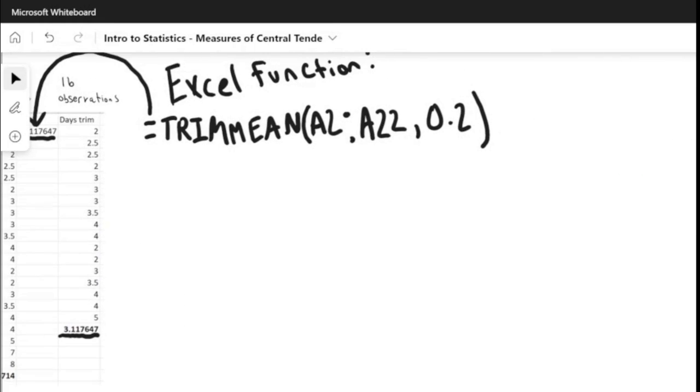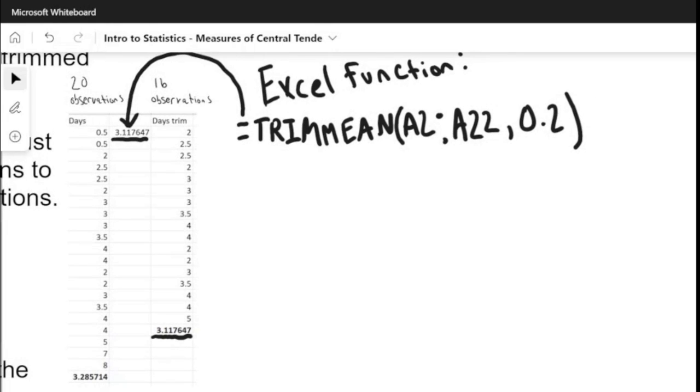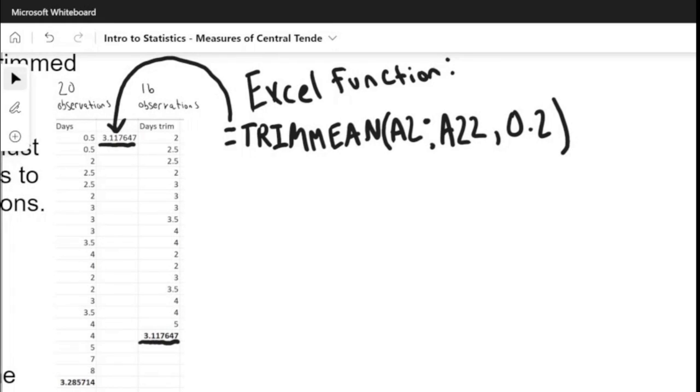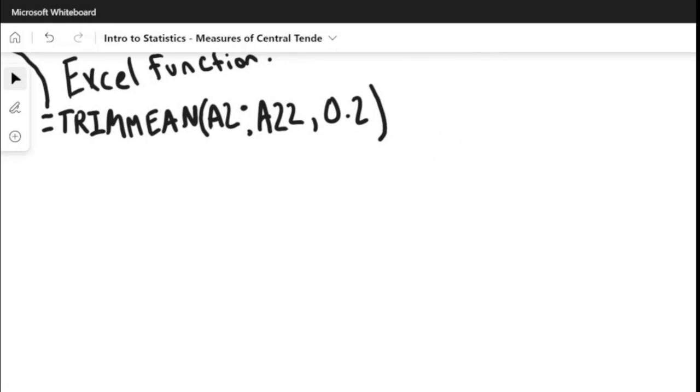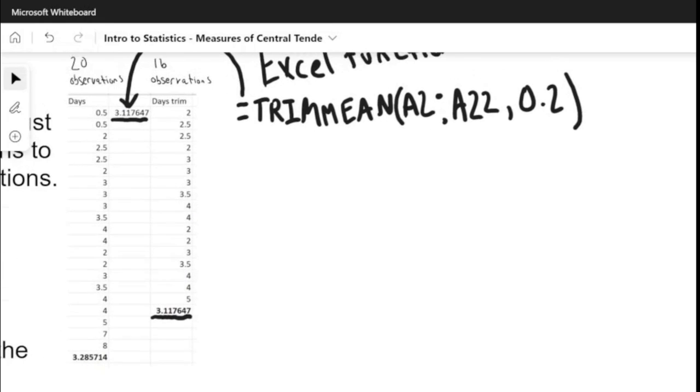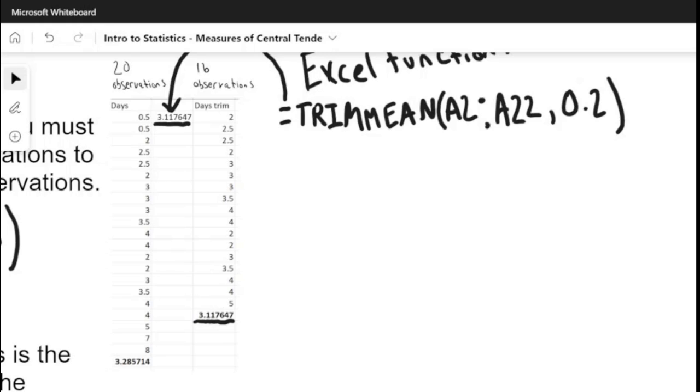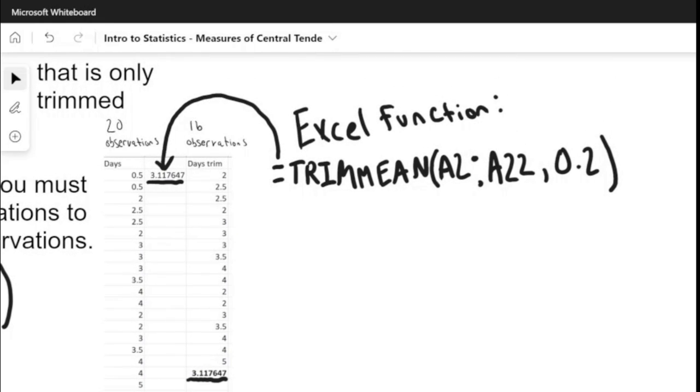Now we'll look at this data set over here where we have a set of 20 observations with a mean of 3.285. At this cell where it's 3.746, that is where I used the Excel function TRIMMEAN from cells A2 to A22, which is the 20 observations listed in the column days, and then trimmed it by 20%, which would be 0.2 in the function. That takes 10% off both ends.